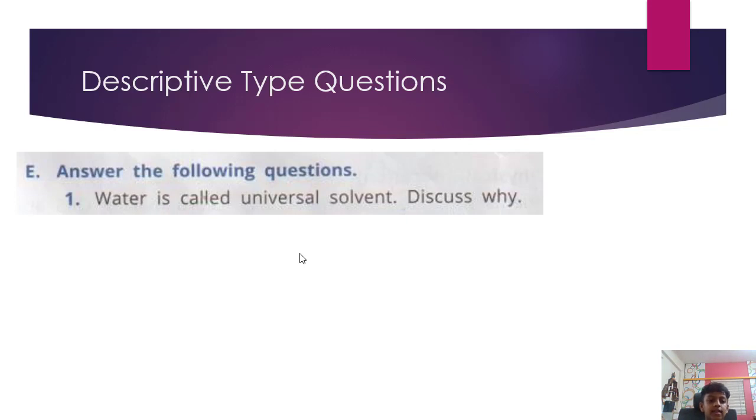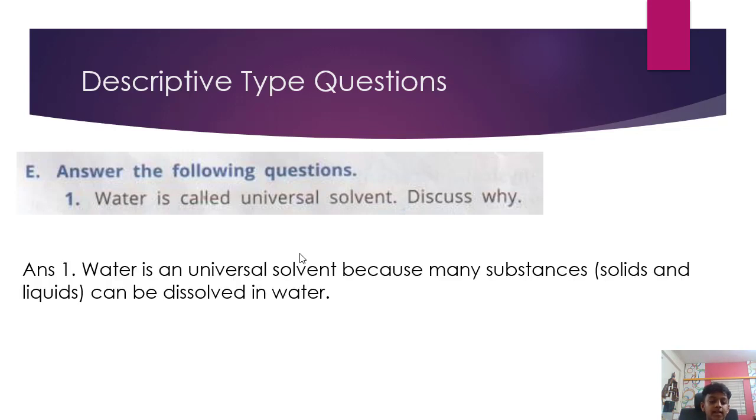E. Answer the following questions. Water is called universal solvent. Discuss why. Answer. Water is a universal solvent because many substances, solids and liquids, can be dissolved in water.